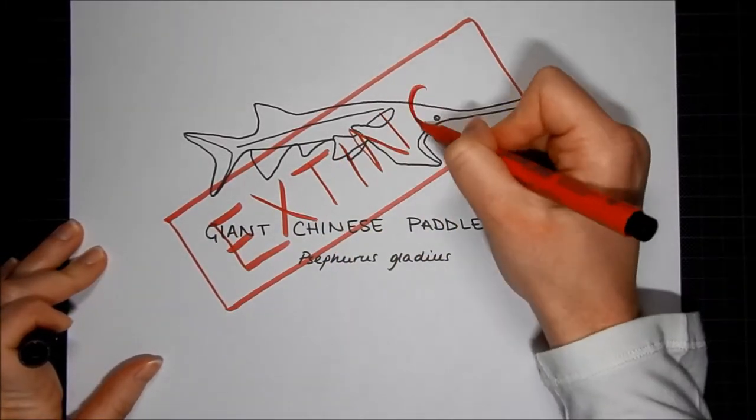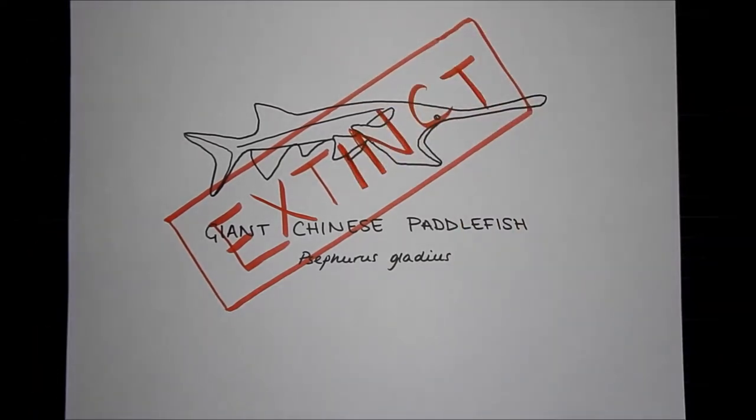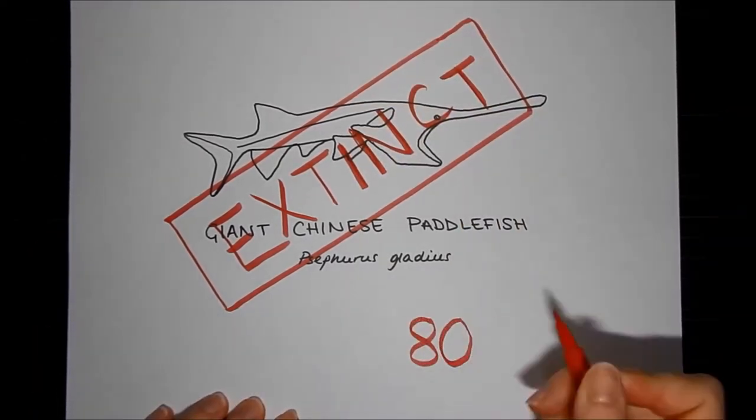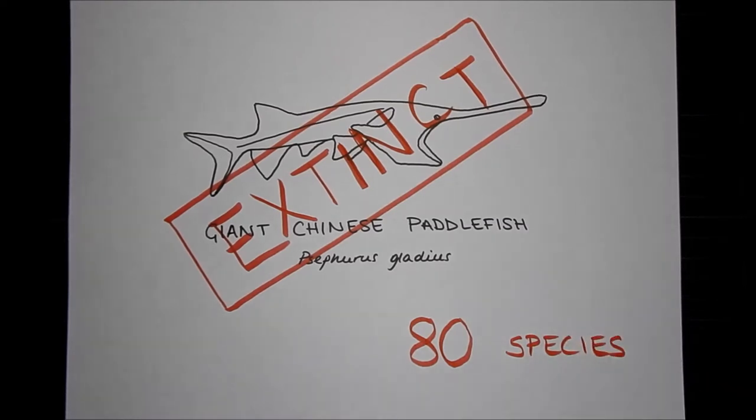But it's not the only one. WWF recently announced that 80 freshwater fish species have been declared extinct so far. And that's just freshwater fish. But perhaps surprisingly, fish aren't the only victims of overfishing.